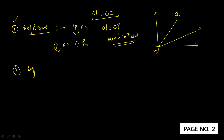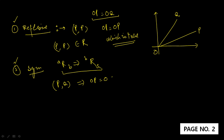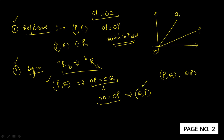Number two: symmetric. In case of symmetric, if A is in relation to B, then B must be in relation to A. For the pair (P,Q): OP is equal to OQ. From this, I can write OQ is equal to OP, which means the pair (Q,P) also holds. If P is in relation to Q, then Q in relation to P is also true. It means both (P,Q) and (Q,P) belong to R.